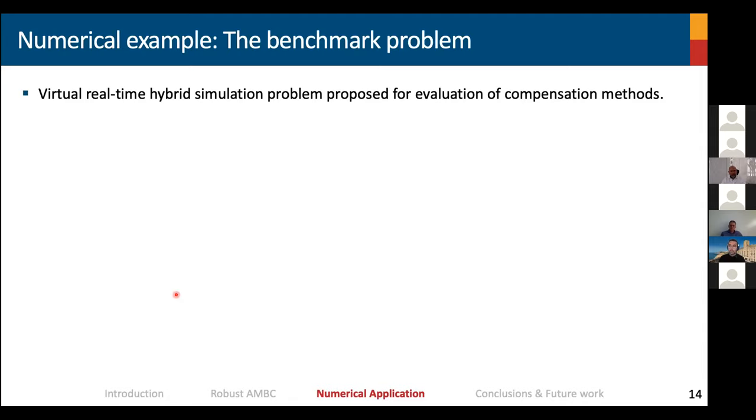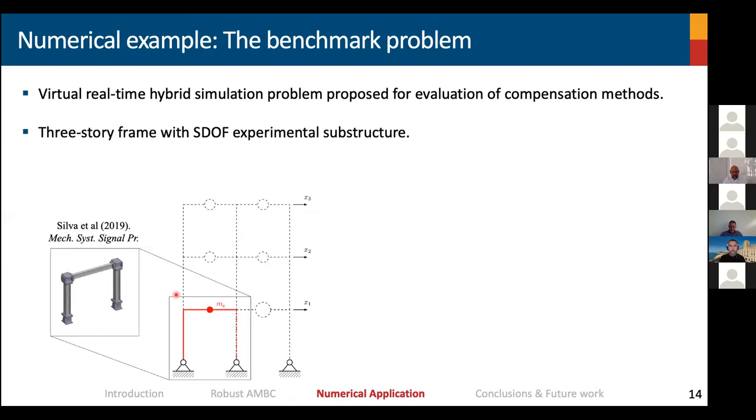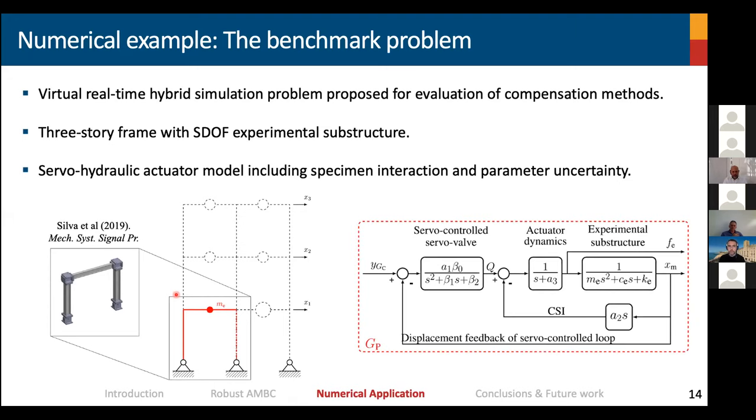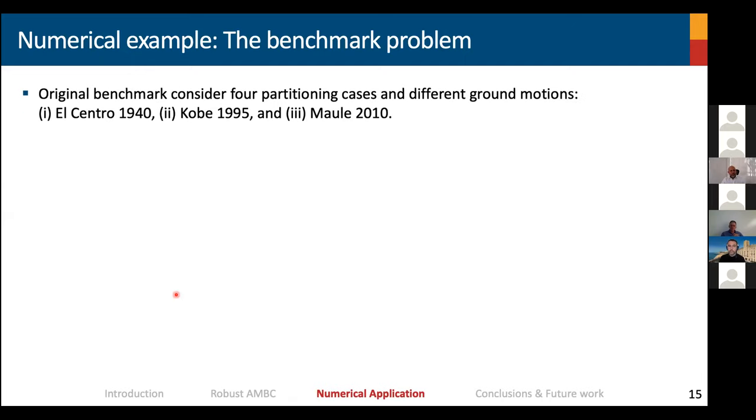For the numerical application to validate this, we use the benchmark problem developed by Professor Dyck's group, and we modified it a little bit. This problem considers a three story frame with a single degree of freedom experimental substructure. The servo-hydraulic actuator model includes specimen interaction and parameter uncertainty. The original benchmark considers four particular cases and different ground motions, starting from Centro 1940, COVID-1995, and Maule 2010.